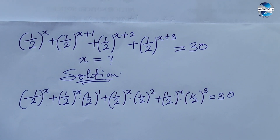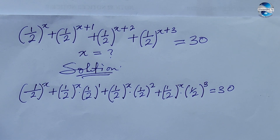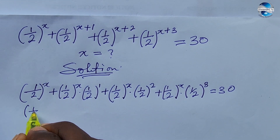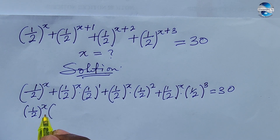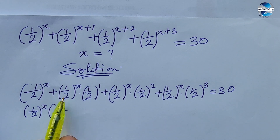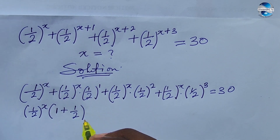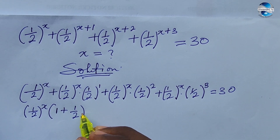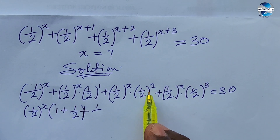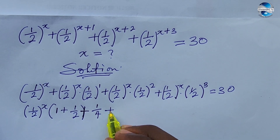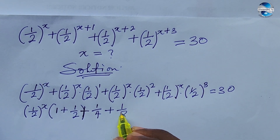We can see that (1/2)^x is common to everything here, so let's factorize it out. We have (1/2)^x times the bracket: dividing each term, we're left with 1, plus (1/2)^1 which is 1/2, plus (1/2)^2 which gives us 1/4, plus (1/2)^3 which gives us 1/8.